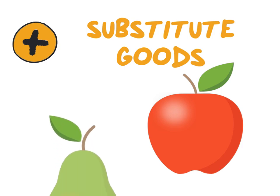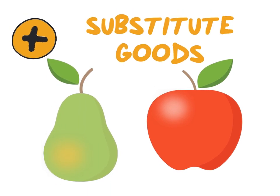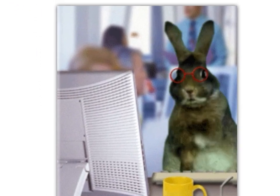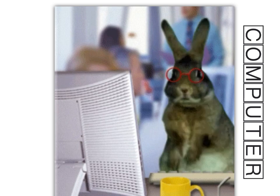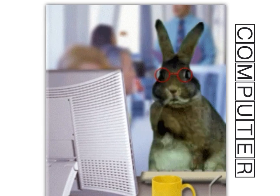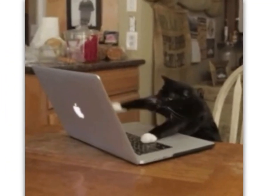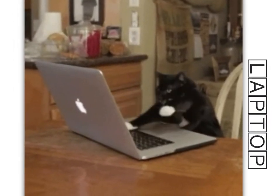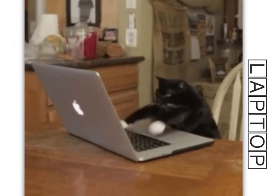Another example: apples and pears. If you want to eat fruit and the price of pears increases, you would rather substitute your consumption from pears to a cheaper alternative, which is apples. As a last example, suppose that you use a computer but the prices of computers rapidly increases — you would now rather buy a laptop as opposed to a computer.